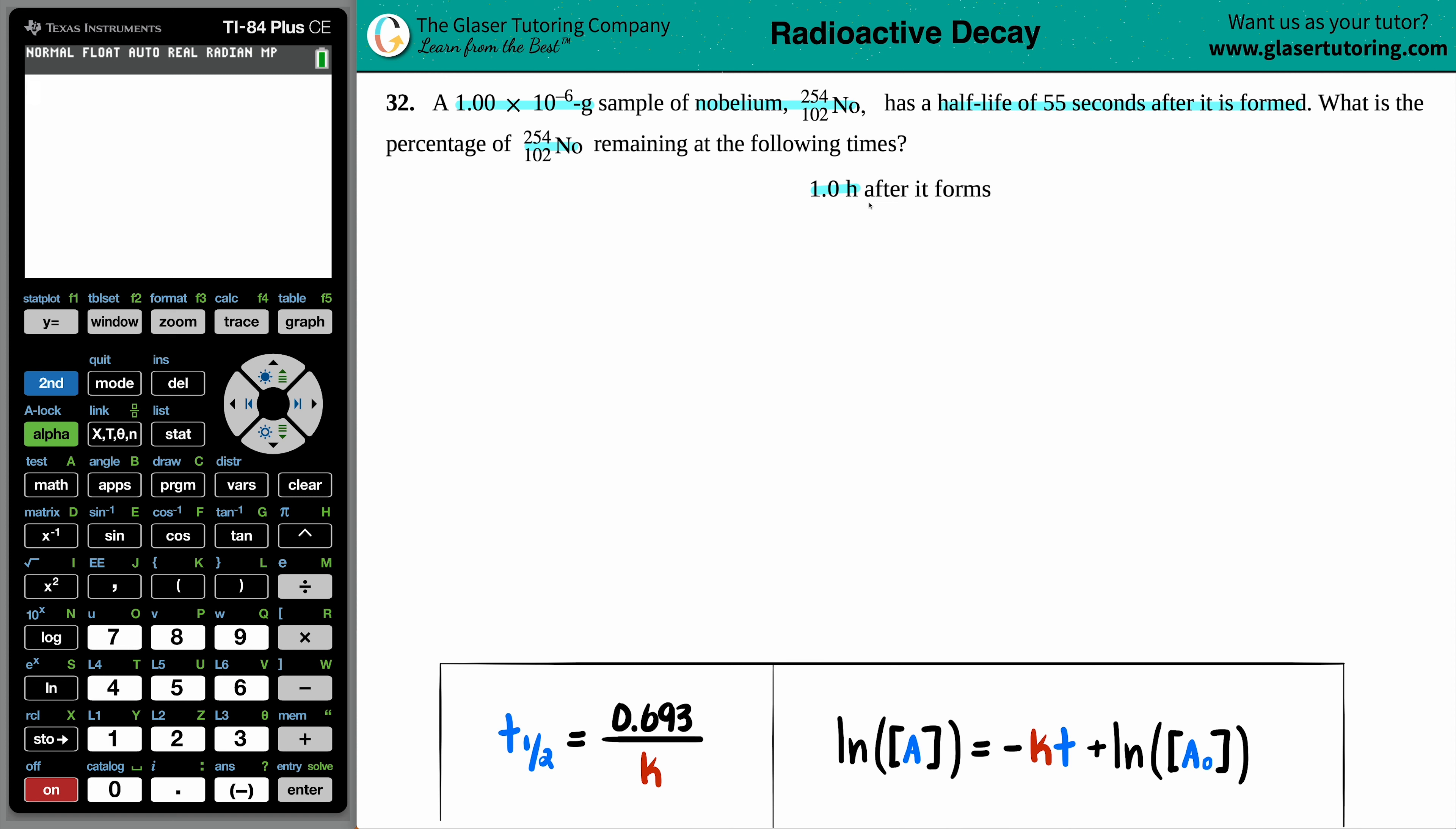Now do we care about what the isotope is? No, not for this problem, because all the information they gave us was for that nobelium. Nobelium has a half-life of 55 seconds and they wanted to find out what the percentage of the nobelium was after one hour after it was formed.